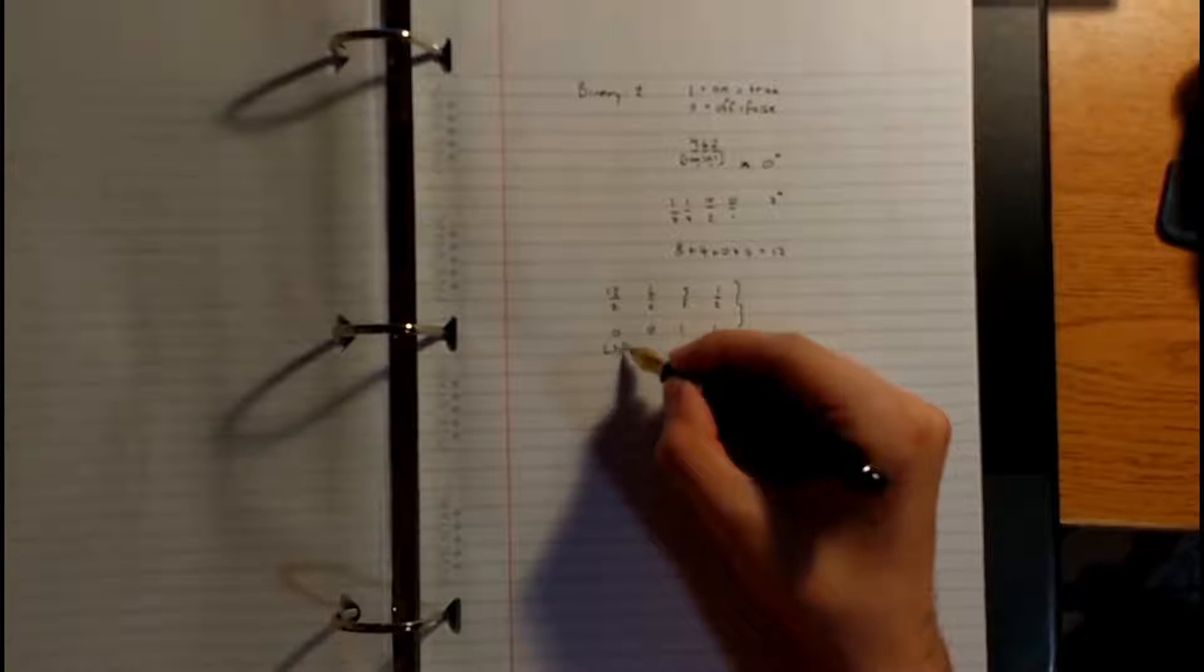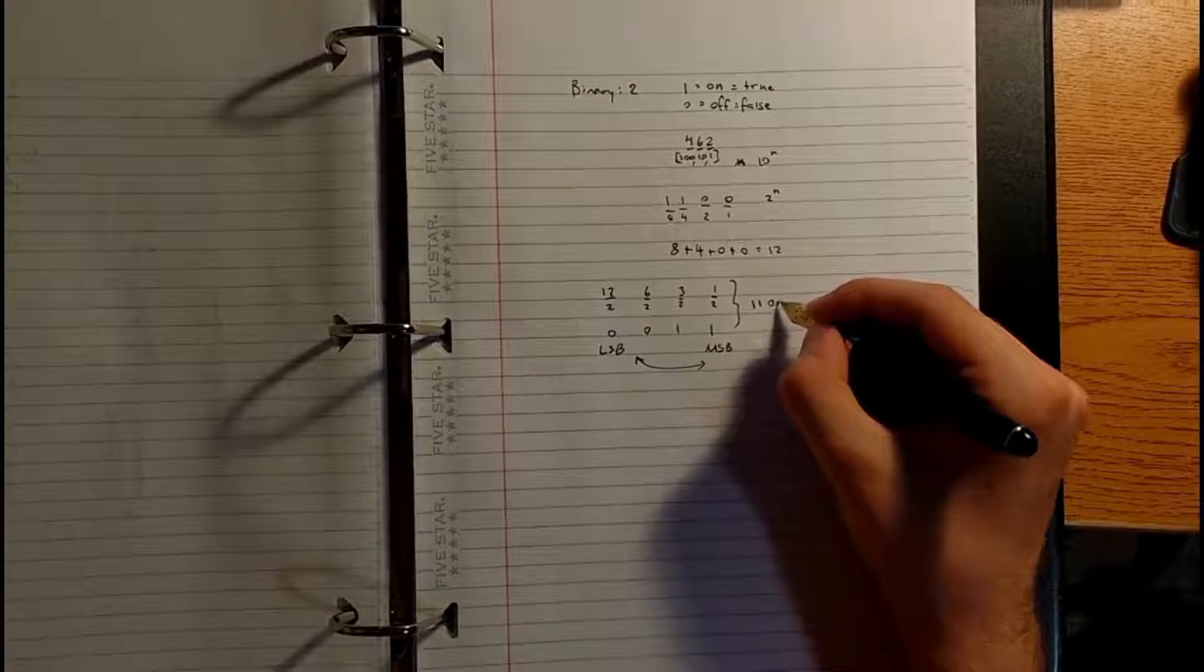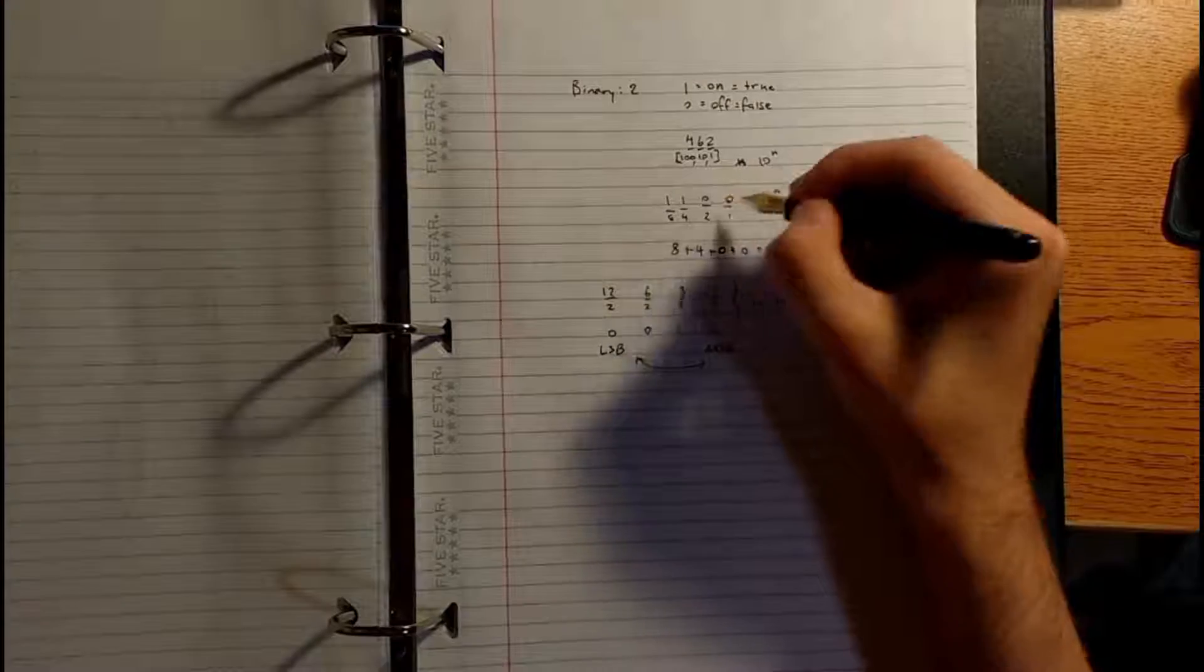And all we have to do now is flip this around. Because right now, this is the most significant bit, and this is the least significant bit. So all we have to do is just flip it, and we've got it. So 1, 1, 0, 0. And that happens to be exactly what we have up here.